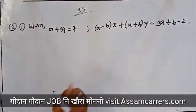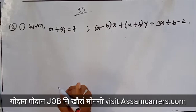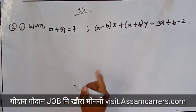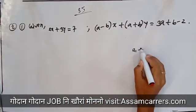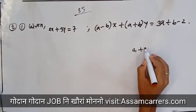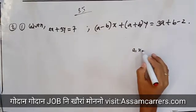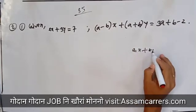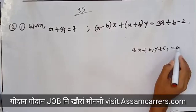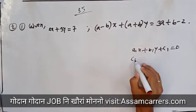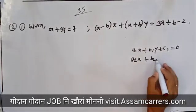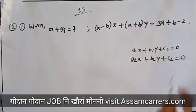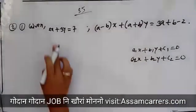We know the coefficients: A1, B1, C1 and A2, B2, C2. So A1x plus B1y plus C1 equal to 0, and A2x plus B2y plus C2 equal to 0.